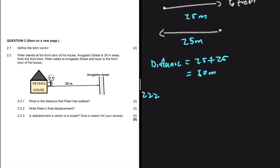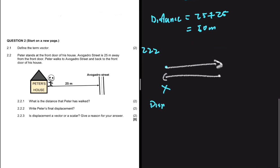Displacement is the change in an object's position. It is not the total distance traveled or the length of the path taken — it is the change in the object's position. Peter starts at his house, goes to the street, and then walks back to the house. Peter is exactly where he started, so there is no change in his position. Therefore, Peter's displacement equals zero meters. The distance is 50 meters, but the displacement is zero meters.